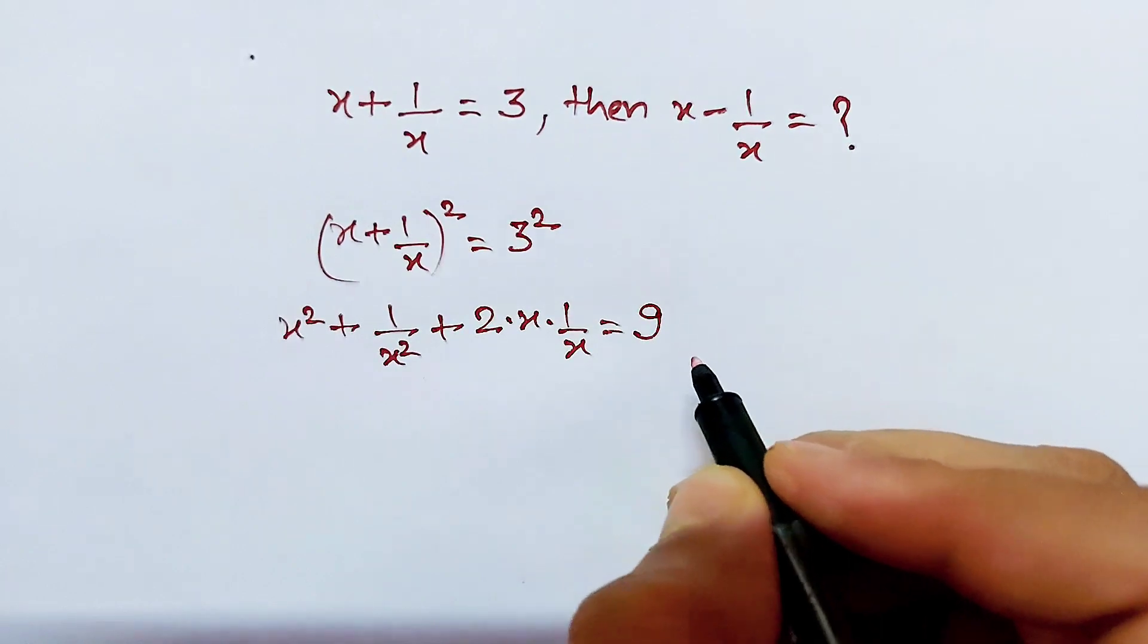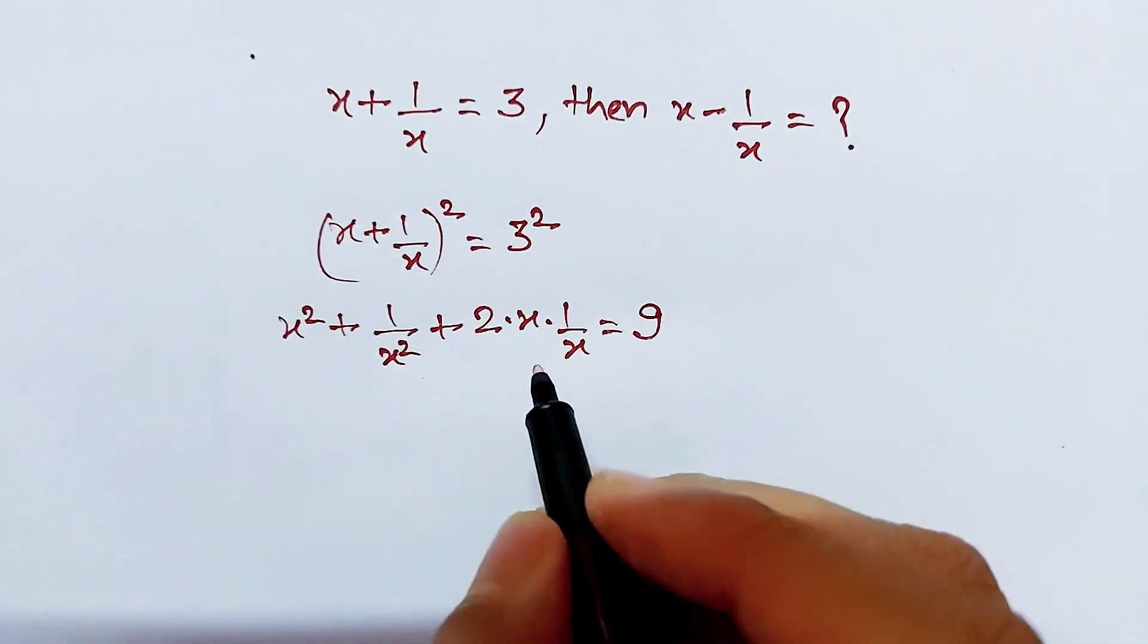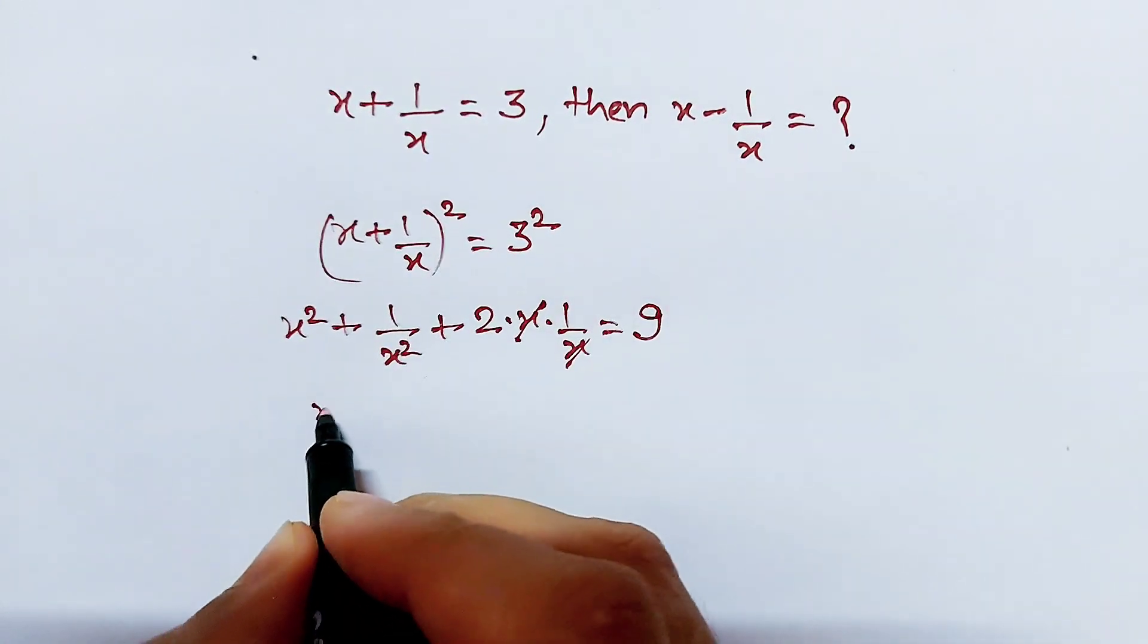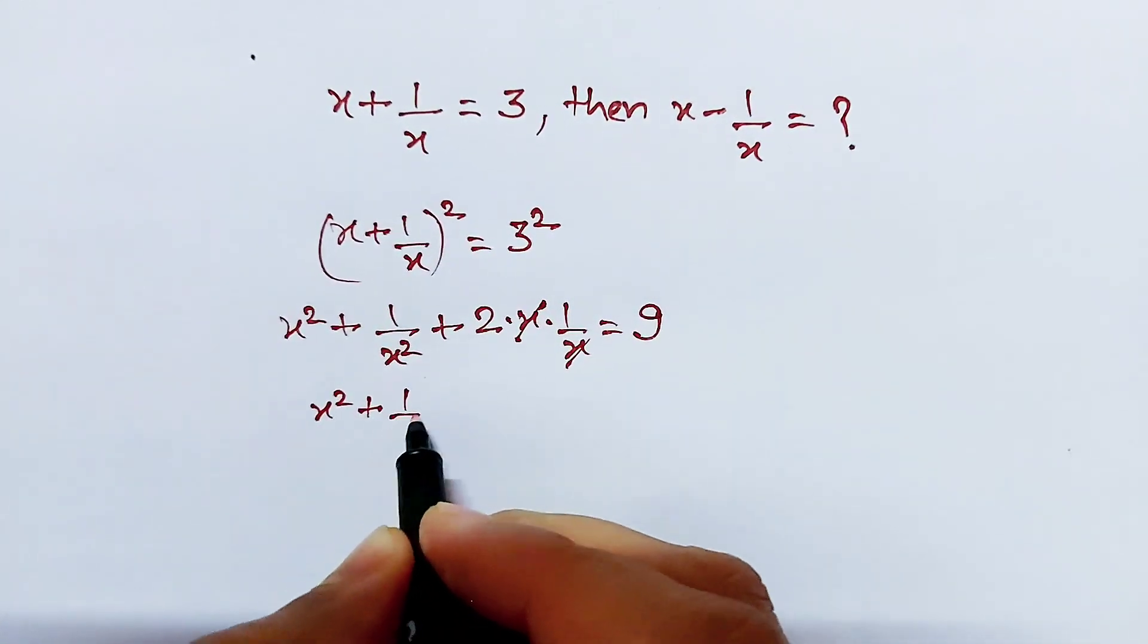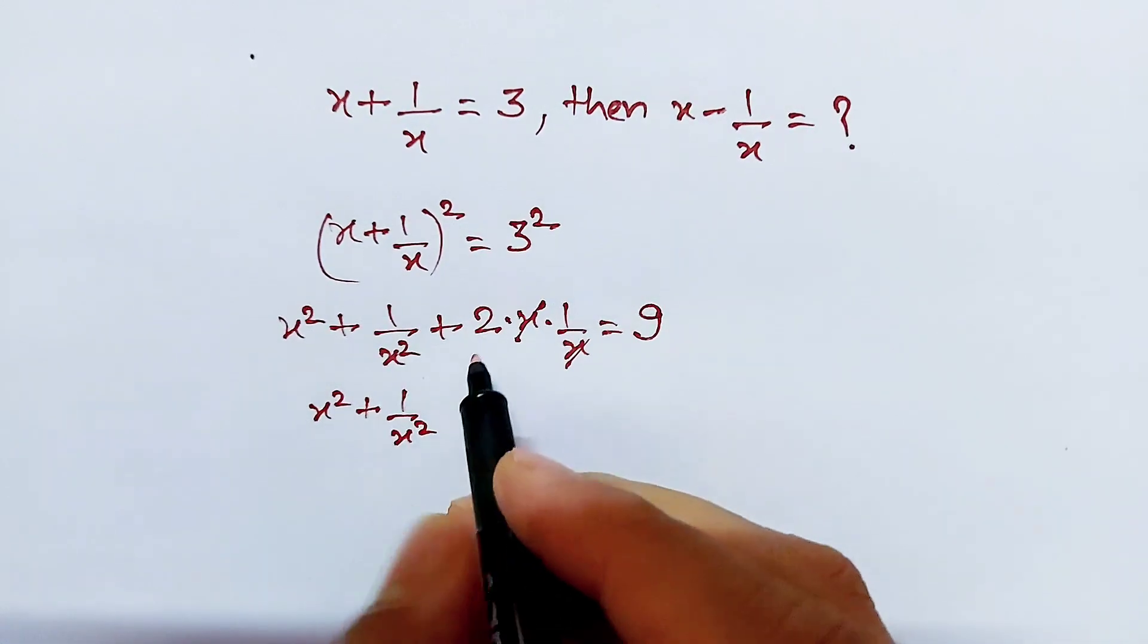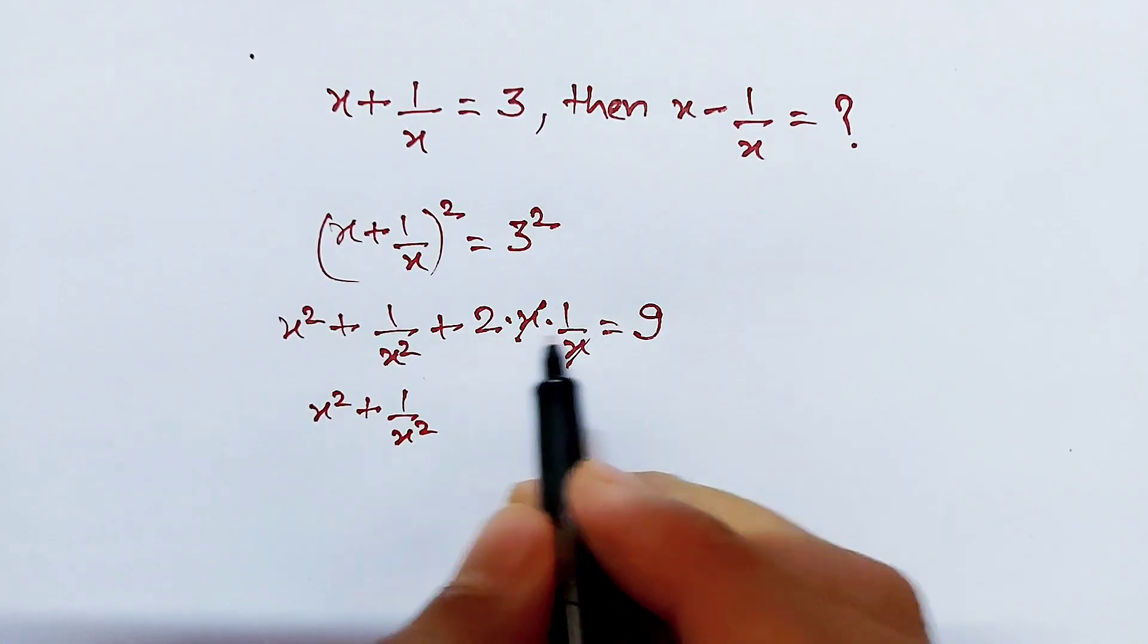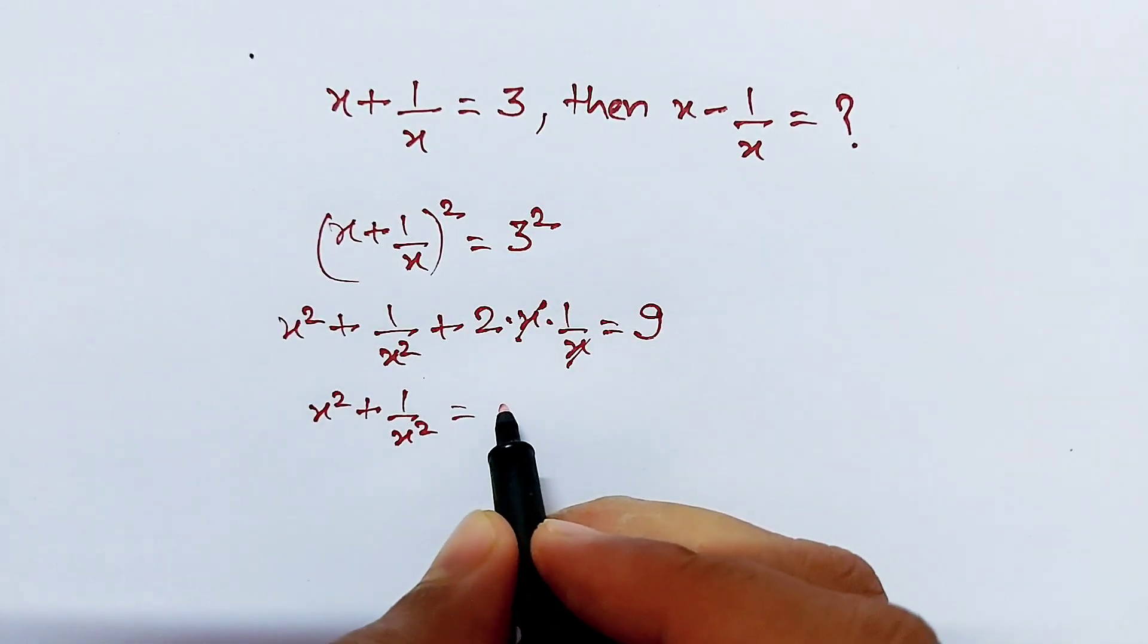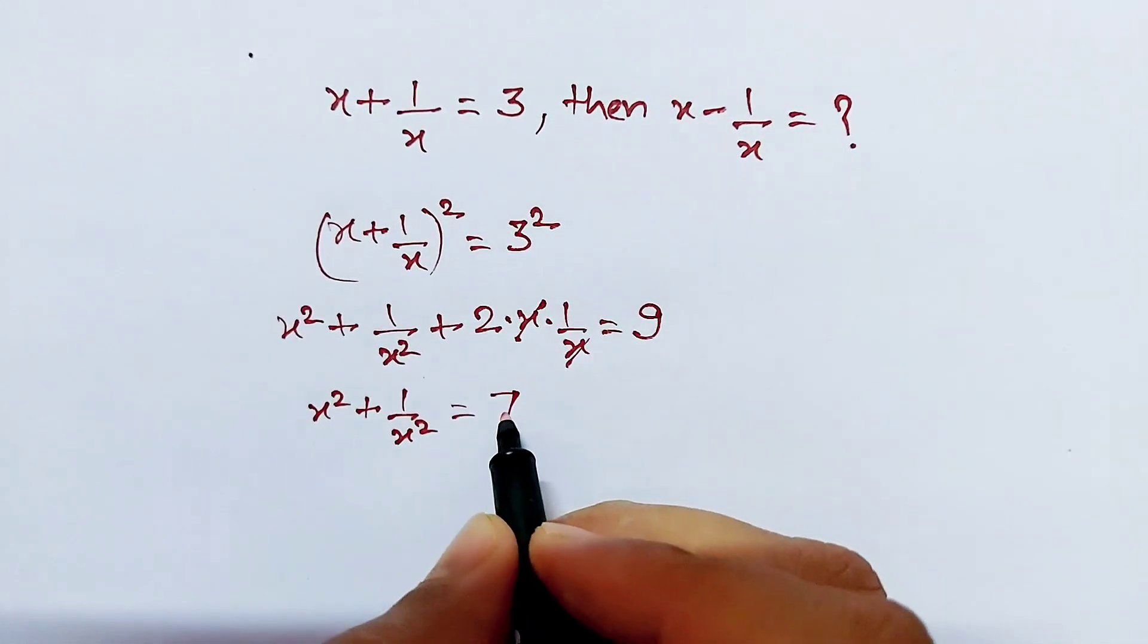Now this x cancels out this x. And x square plus 1 over x square, transposing to the right-hand side, equals 9 minus 2, which is equal to 7.